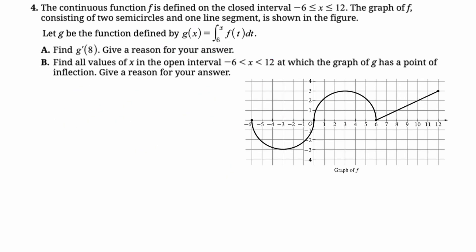The continuous function f is defined on the closed interval from negative 6 to 12. The graph of f consists of two semicircles and one line segment shown in the figure. Let g be the function defined by g of x is the integral from 6 to x of f of t dt. So for part A, we're going to find g prime of 8 and give a reason.